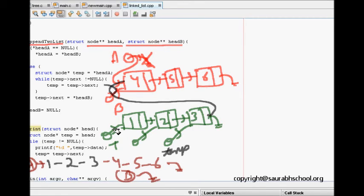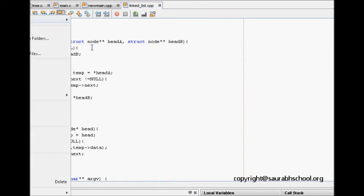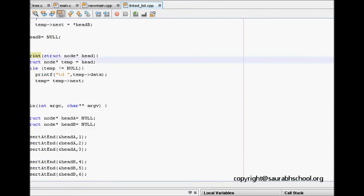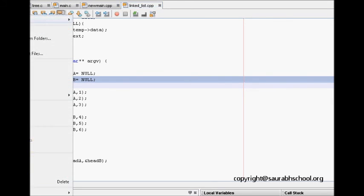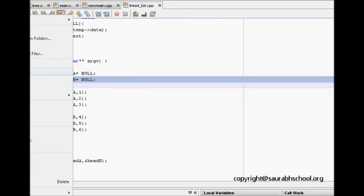So this was about appending to list. Now we will just check if this code is running. So what we do is that we create here in the main two pointers, two lists: node star head A, node star head B. We do insert at end in the head A: one, two, and three. Then to the linked list two: four, five, and six. And now we do append. So let's run this code.